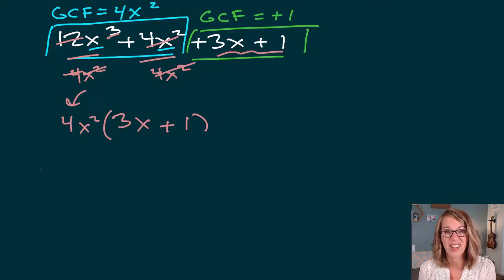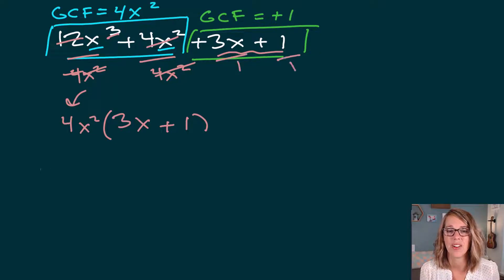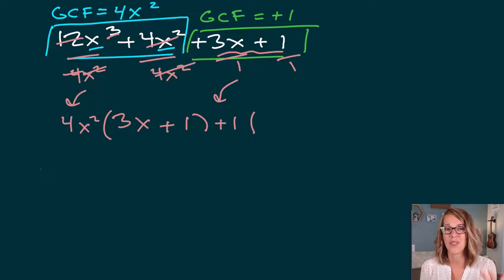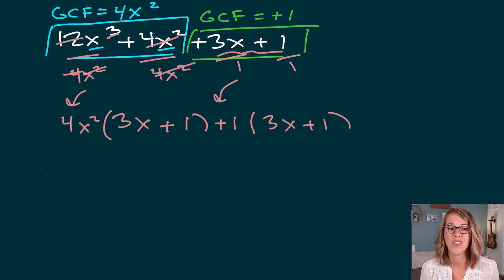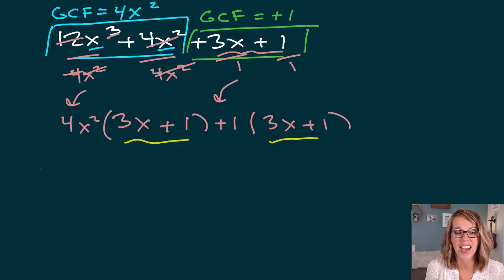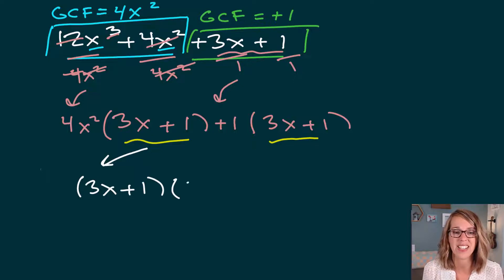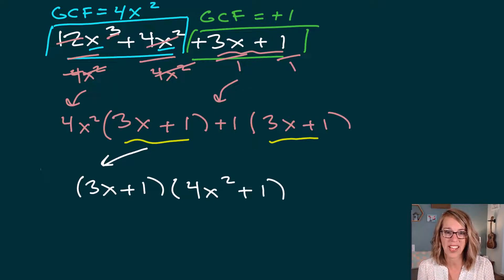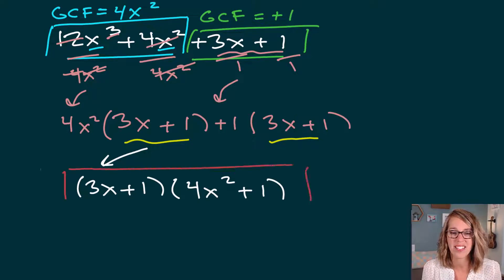I can see I'm almost there, but I need that placeholder: I'm factoring out 1 from the second group, which doesn't change anything, and I still get 3x plus 1. Again, no coincidence — I ended up with 3x plus 1 in both groups. Factoring that out in front gives 3x plus 1, and in the parentheses I get 4x squared plus 1. A quick check confirms nothing factors further, so this is our factorization.